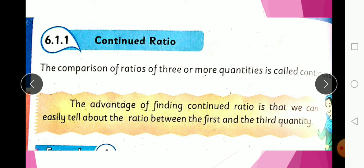The advantage of finding a continued ratio is that we can easily tell about the ratio between the first and third quantity. So we can tell about the first and third quantity directly.